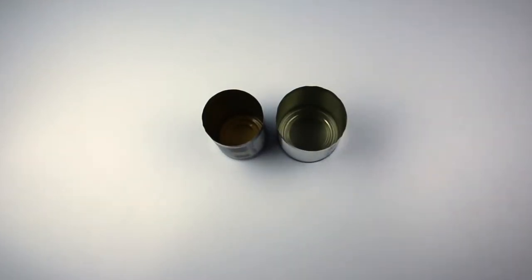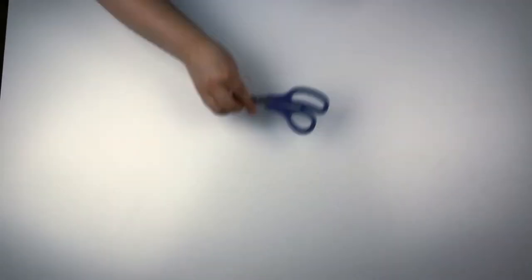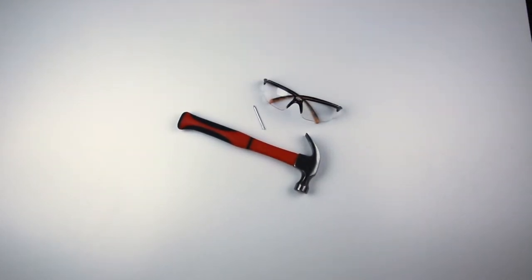For this project you're going to need two clean tin cans of both the same size. You'll need string and scissors and you'll also need a hammer, a nail, and some safety glasses. You'll need an adult too but I couldn't fit an adult on this table.